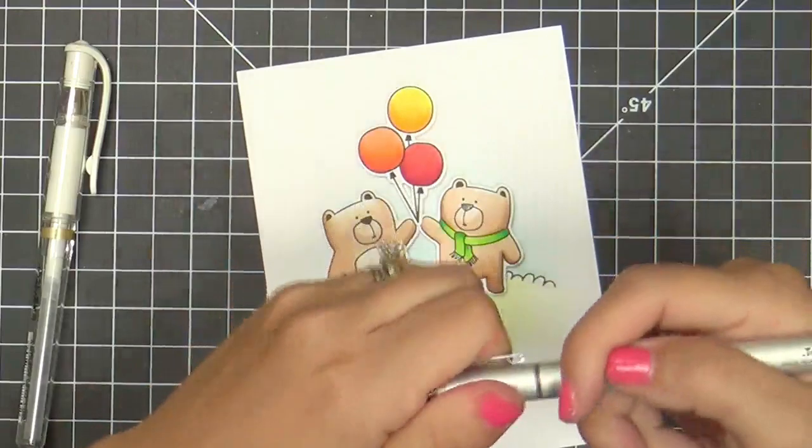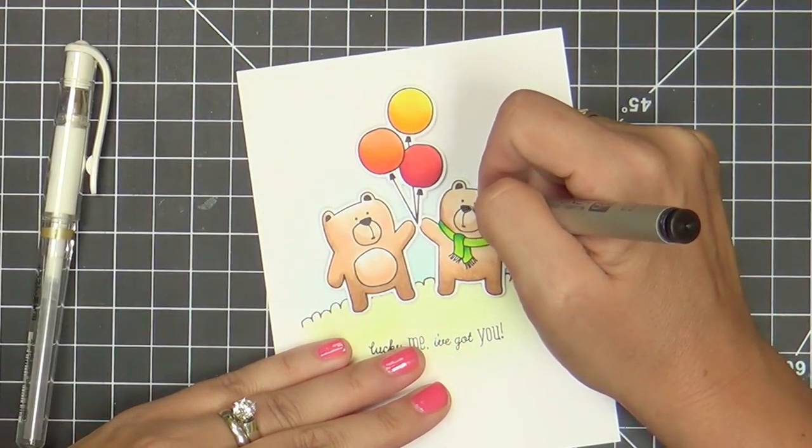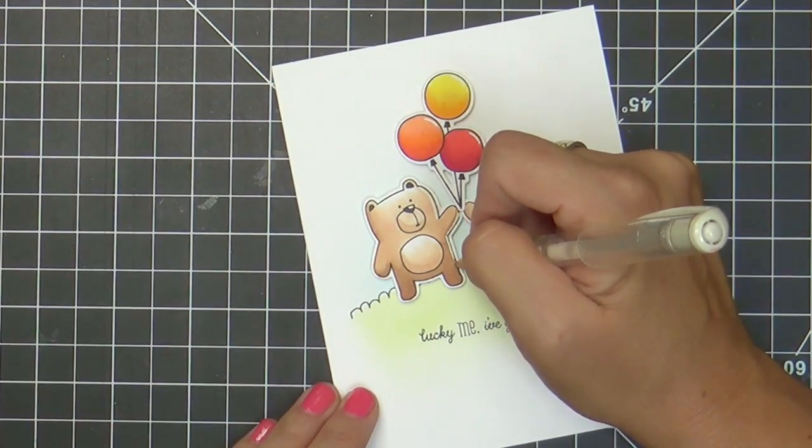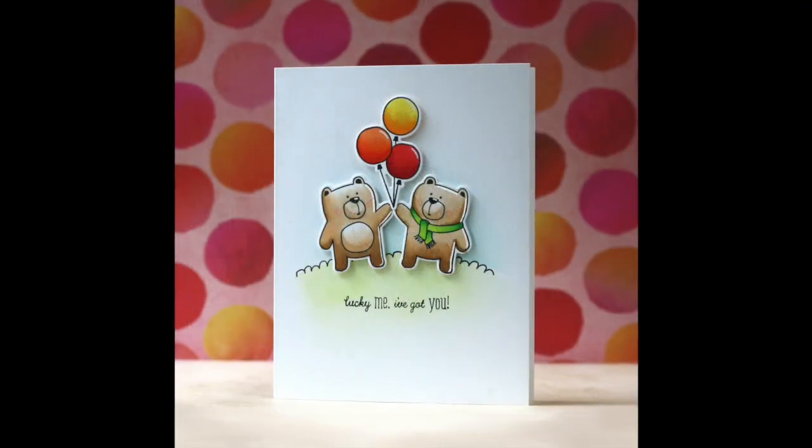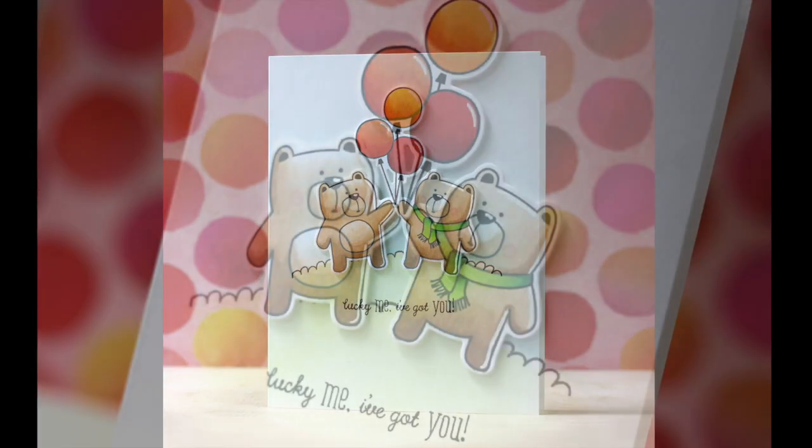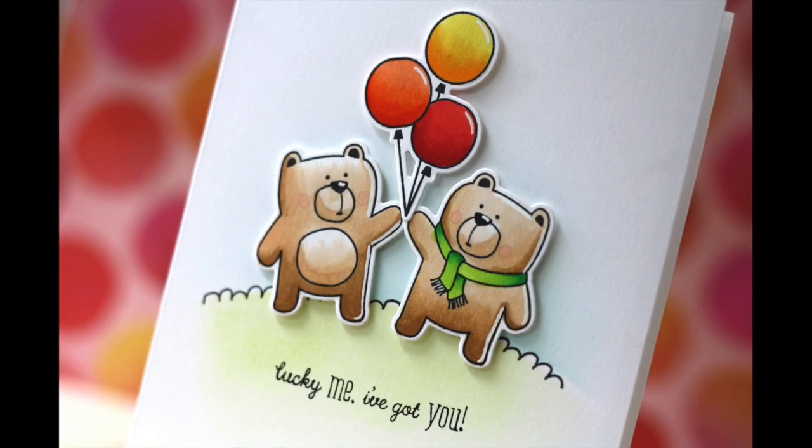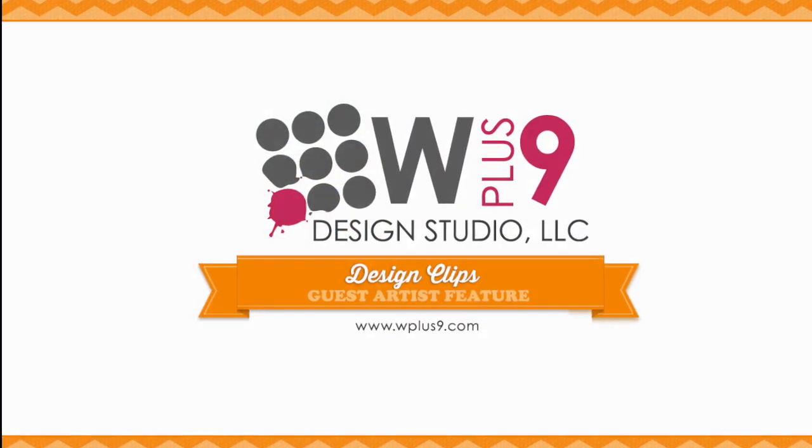Now, the little finishing touches. I take my Copic Multiliner and I just kind of fill in any spots that didn't get nice and black, like the noses and the ears and things. And then, just for a little something-something, which is totally not necessary, it's optional, I take a white gel pen and I add some subtle details to the balloon and little highlights on the bears. This card's finished. Thank you so much for joining me. I hope you have a wonderful day and I will see you next time. Bye.